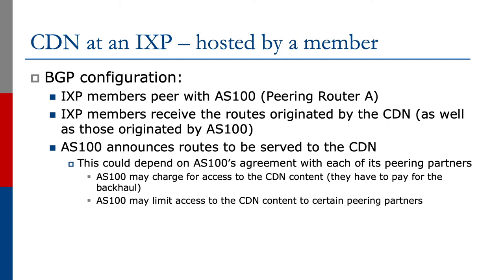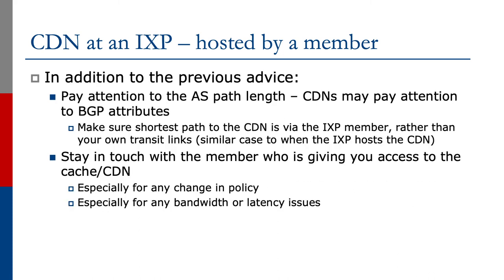AS100 might well charge for access to the CDN content because they have to pay for the backhaul, and AS100 may even limit access to the CDN content to certain peering partners. In addition to previous advice, paying attention to AS path length is quite important. CDNs may pay attention to BGP attributes, so make sure the shortest path to the CDN is via the IXP member rather than your own transit links. Stay in close touch with the member giving you access to the CDN or the CDN content cache, especially for any change in policy or any bandwidth or latency issues. If there are bandwidth or latency issues, it could happen that the CDN would prefer to feed traffic to your network directly over your transit link, rather than from the local instance of their CDN or cache.